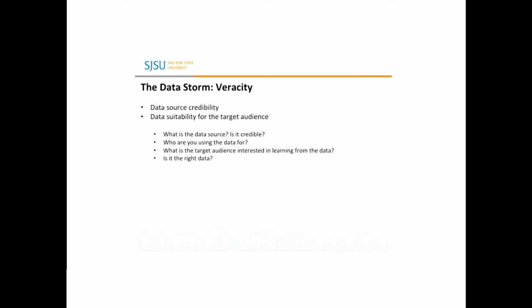And finally, unlike carefully governed internal data, most big data comes from sources outside our control and therefore suffers from significant correctness or accuracy problems. That's veracity — something librarians and information professionals are really concerned about. Veracity exhibits both the credibility of the data source as well as the suitability of the data for the target audience. We must think about audience suitability and how credible the data source is. For the data storm, very often these four Vs exist simultaneously, which increases a lot of complexity in dealing with, interpreting, and presenting the data.